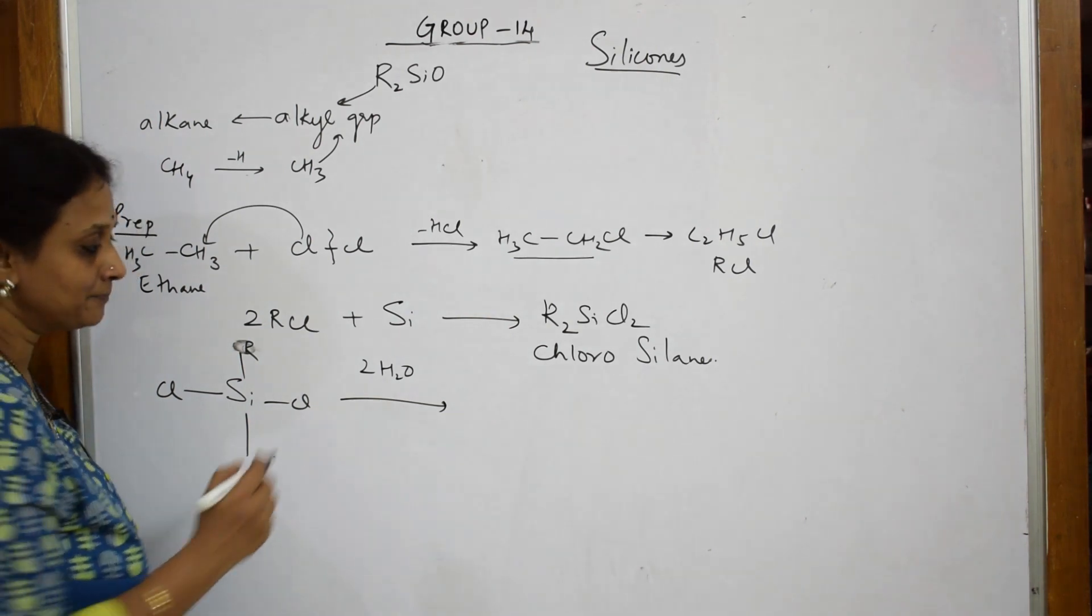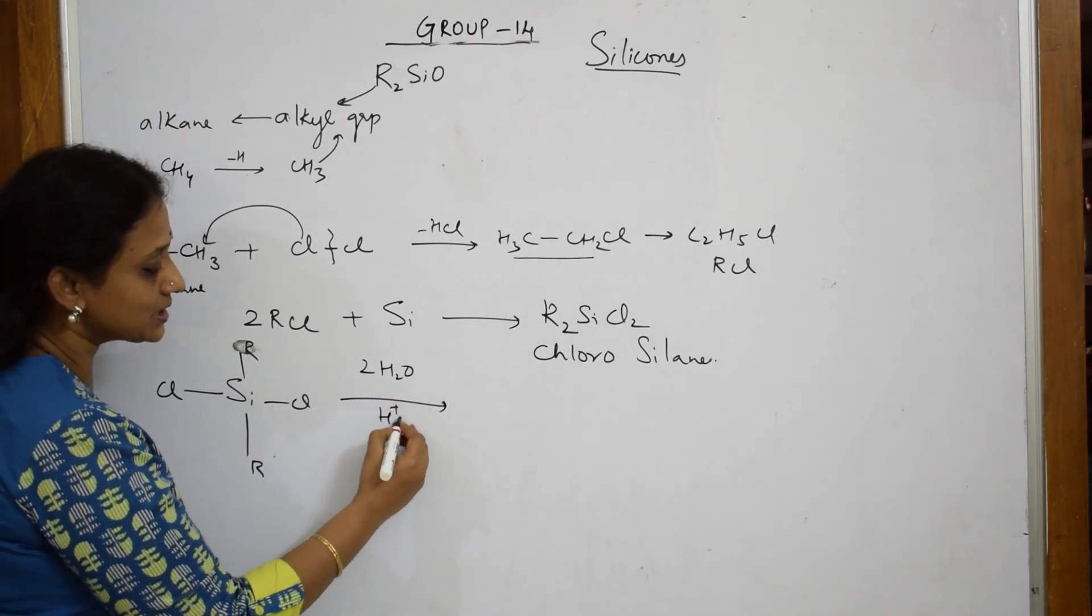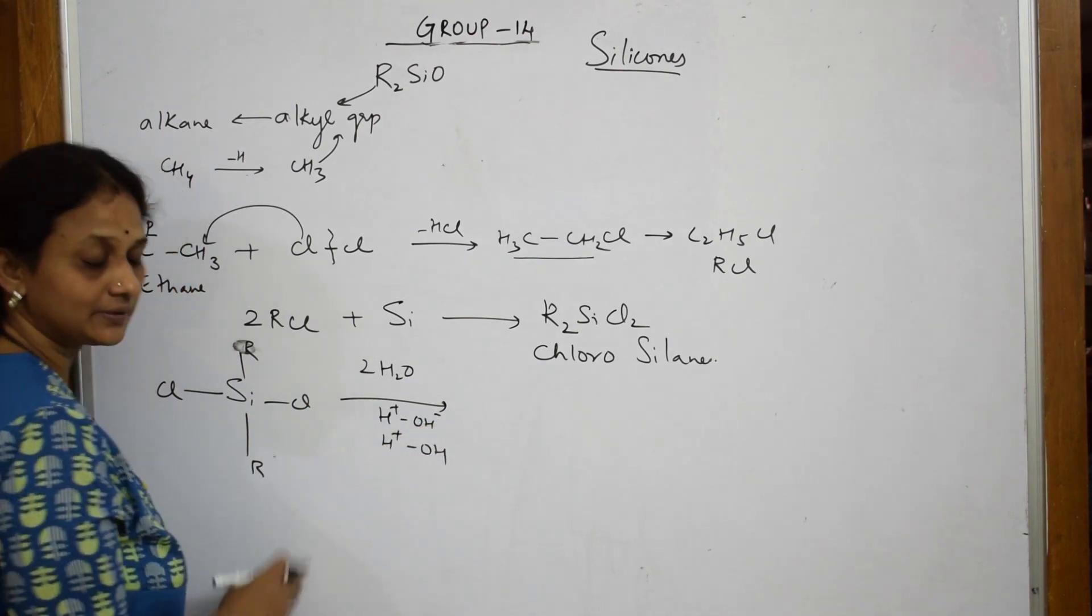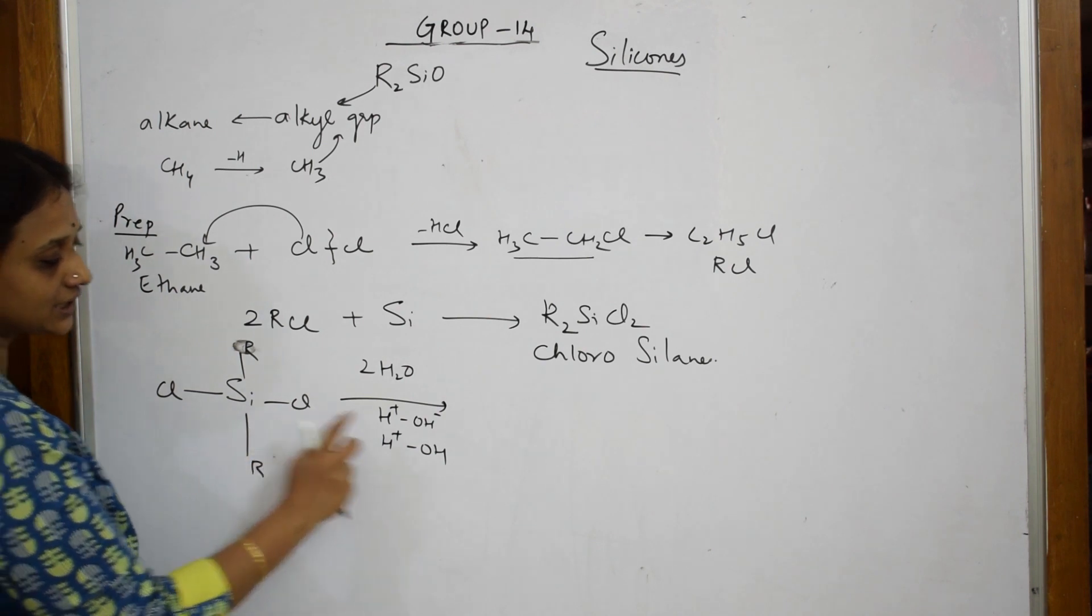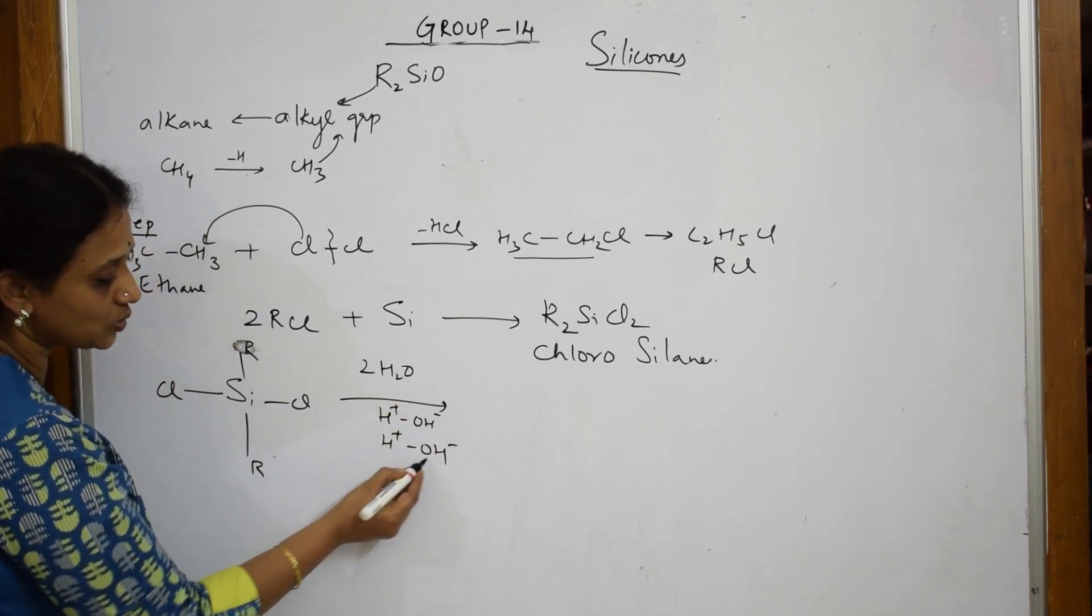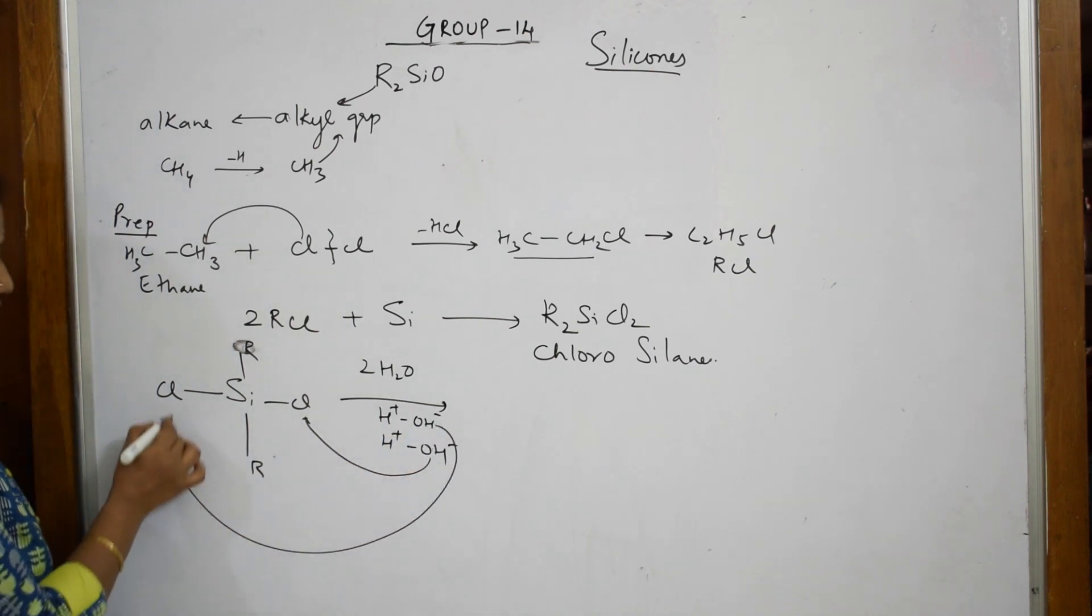Just see, why did I add? If I open up this water molecule, it is nothing but H plus OH minus, H plus OH minus, correct? Now, observe. This is also negative. This is also negative. This negative OH minus goes and replaces these two chlorine atoms.